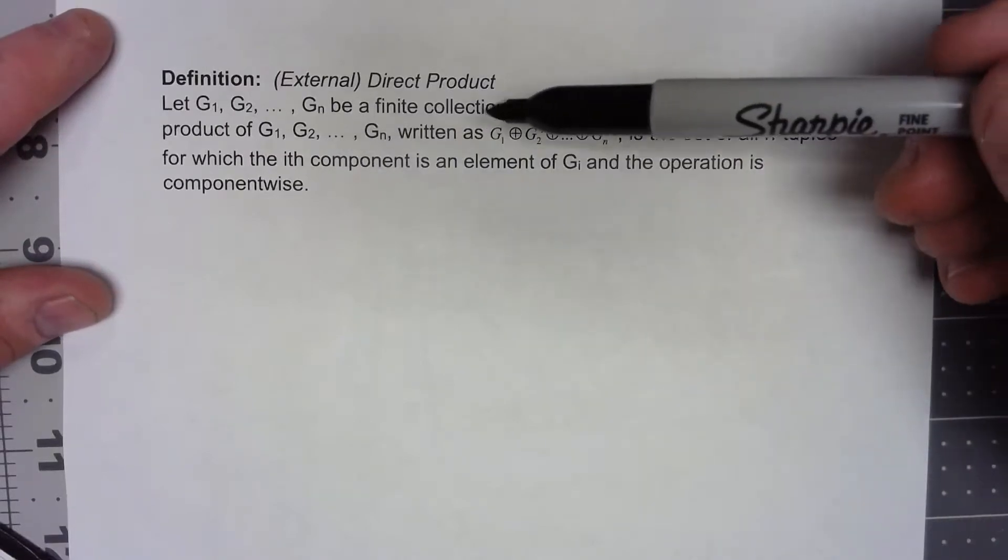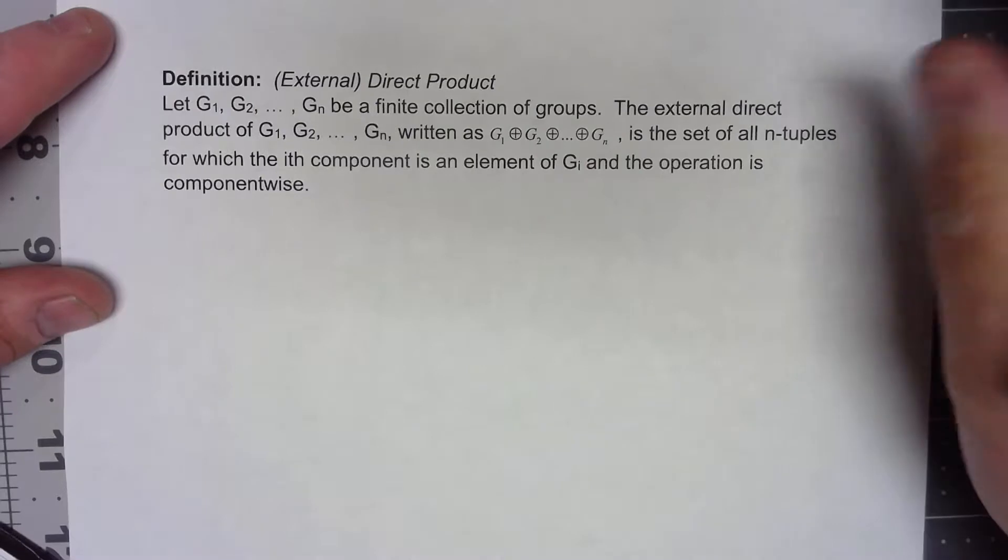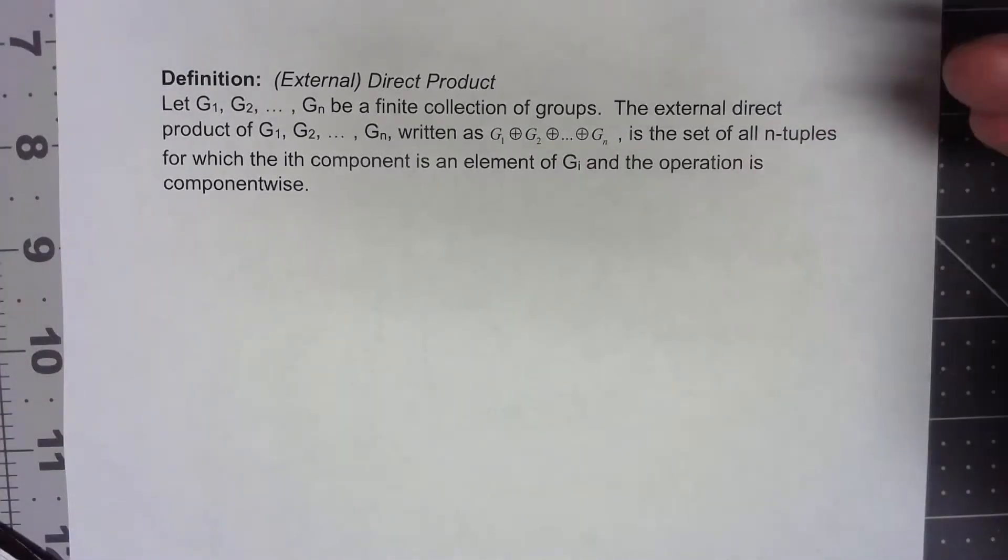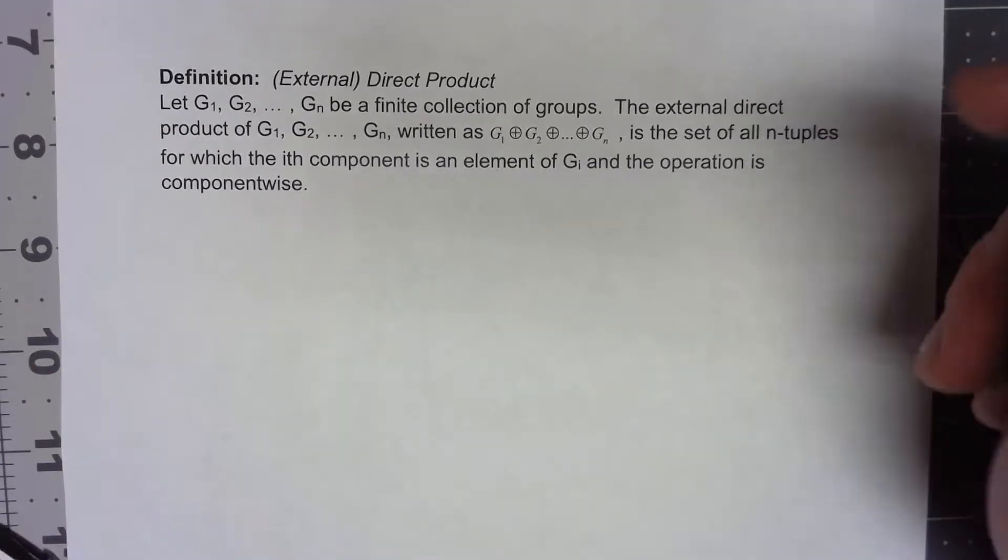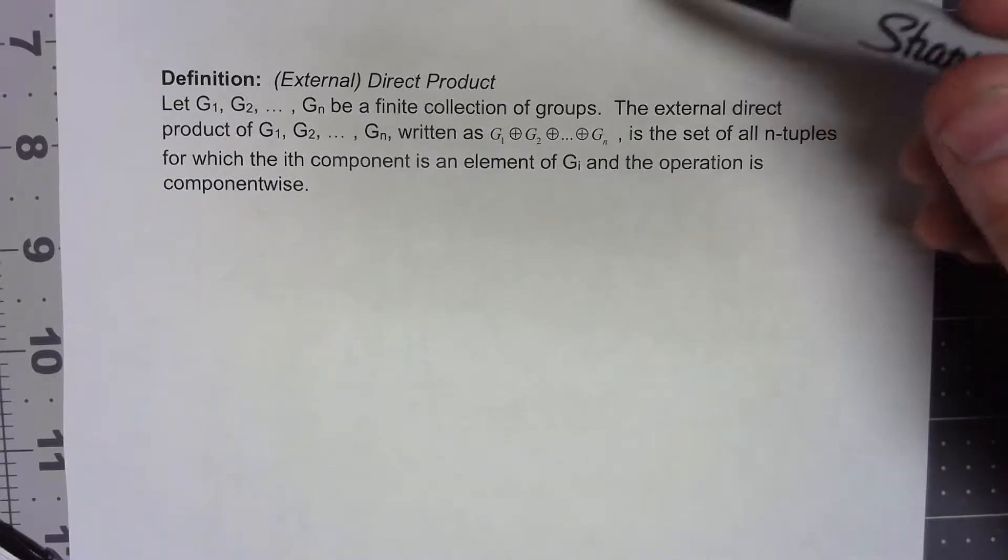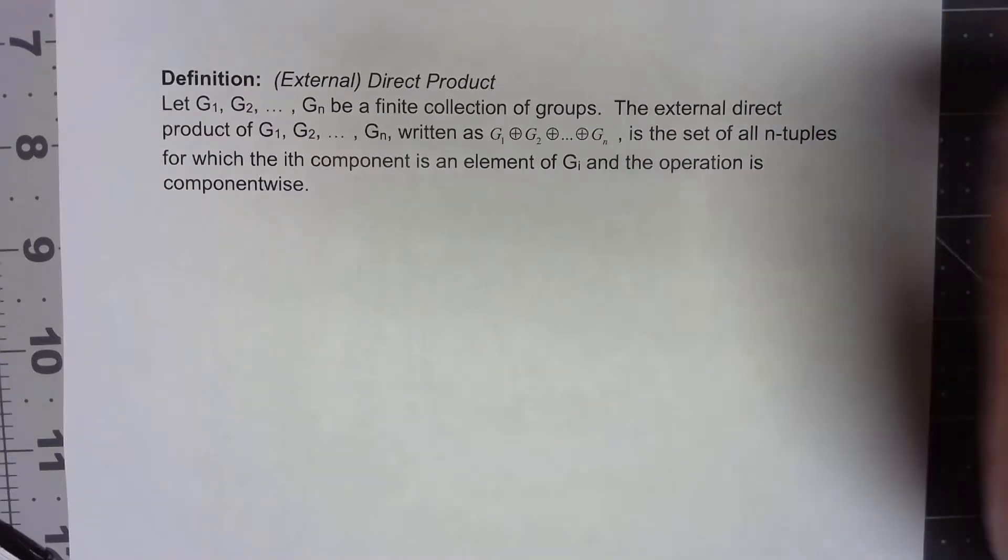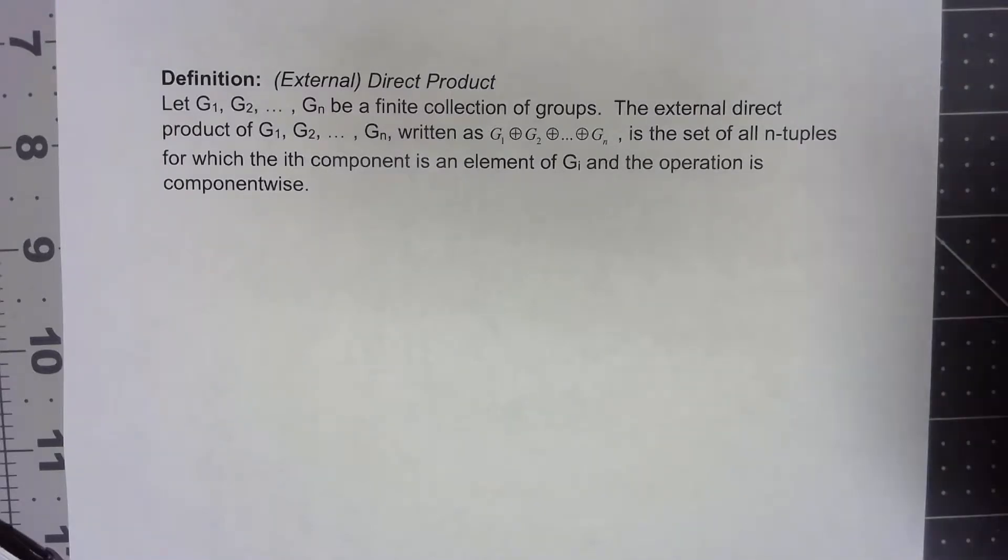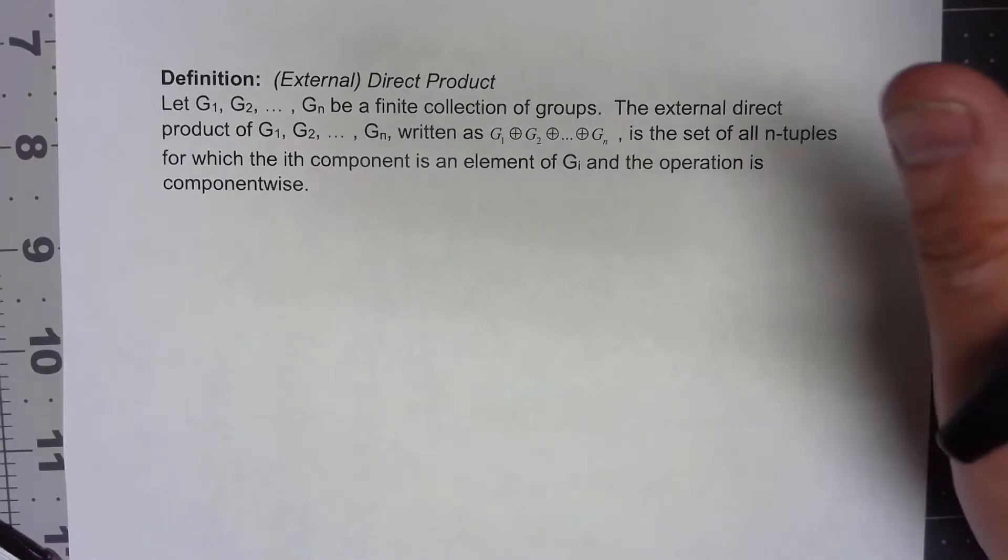So we have a bunch of groups, call them G1 up to Gn. What we're going to do is take as a set an element from the first group, an element from the second group, all the way down, and all possible things like that. Then we're going to do the operation as if it was from that group on each element. That sounds way more complicated than what it is.